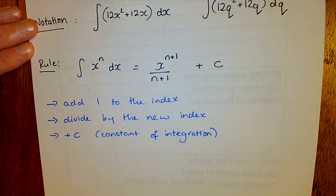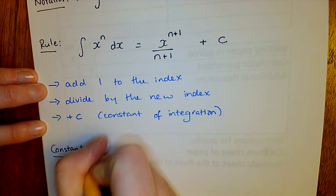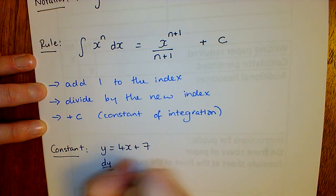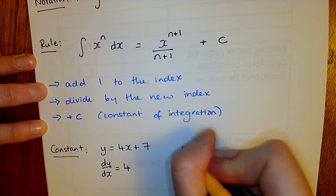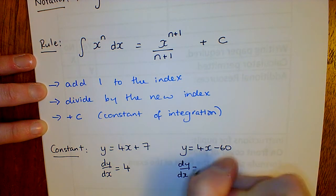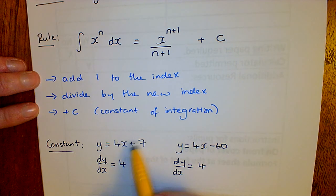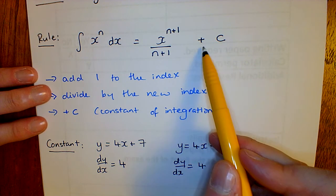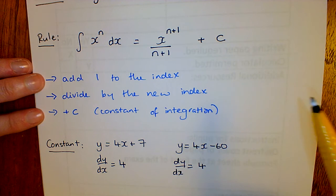The reason we have plus c is this: if you think about y equals 4x plus 7, when we differentiate that we just get 4 — the 7 disappears. Similarly, y equals 4x minus 60 also differentiates to give 4. There's no way of telling what constant was there, so we put in plus c to say there could be a constant involved.